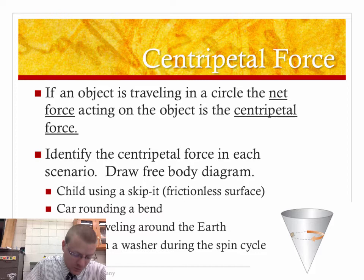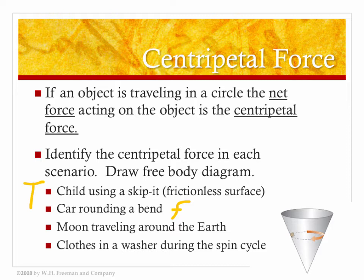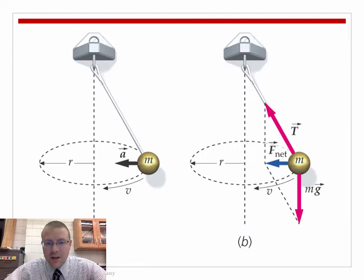In the skip-it, tension was the centripetal force. For the car going around the bend, friction is what keeps you around the circle. For the moon going around the Earth, gravity is the cause of circular motion. For your clothes in the dryer, the support of the walls forces you toward the center of the circle. Centripetal force is no new force — it's just another name for the net force of objects traveling in circular motion.